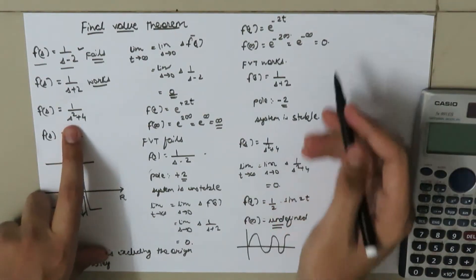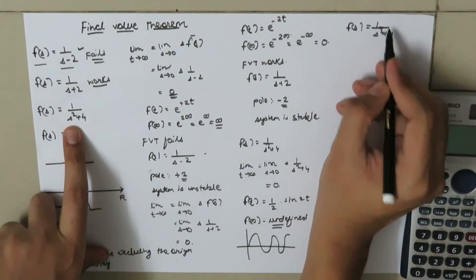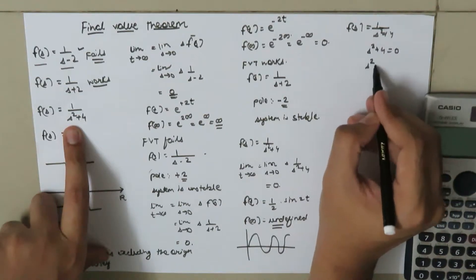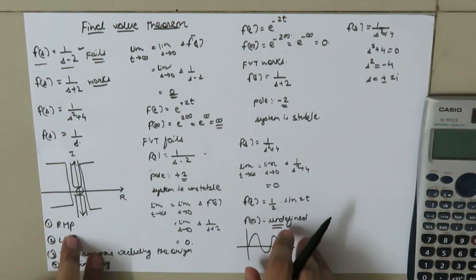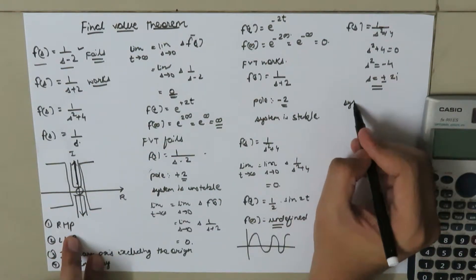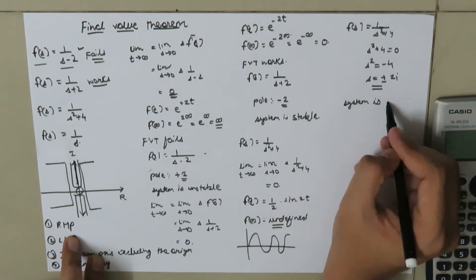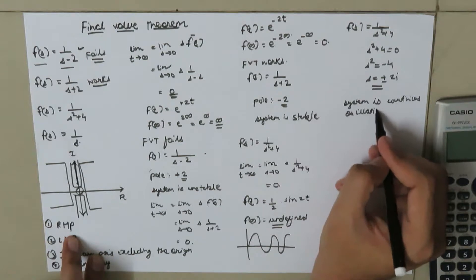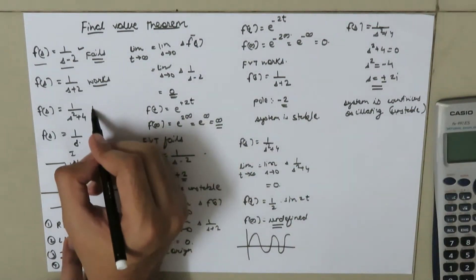This is because F(s) equals 1 over (s squared plus 4) has poles found by setting s squared plus 4 equal to 0, giving s equal to plus or minus 2i. These poles lie on the imaginary axis, making the system continuously oscillating and unstable. Therefore, the final value theorem fails for this case.